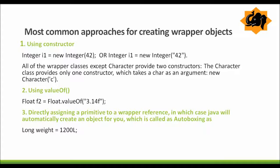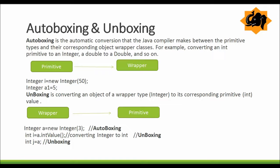You can also directly assign a primitive to a wrapper reference, in which case Java will automatically create an object for you — this is called autoboxing. Autoboxing is the automatic conversion that the Java compiler makes between primitive types and their corresponding wrapper classes. For example, the value 50 is an int primitive type and it gets converted into an Integer wrapper.